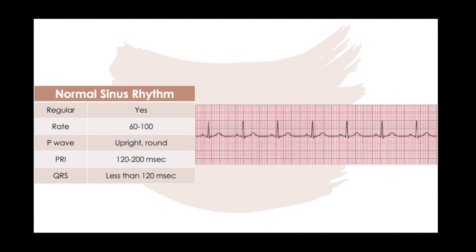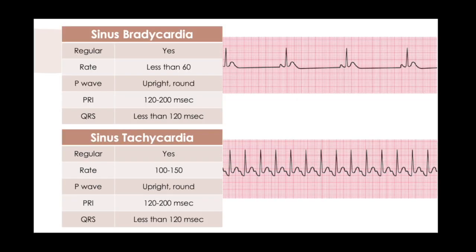When all five of those things are in the normal range, we get normal sinus rhythm, which most of us are in. It's regular — same distance between P wave and P wave, R wave and R wave. The rate is between 60 and 100. The P wave is upright and round. The PR interval is in the normal range, and the QRS is less than 120 milliseconds.